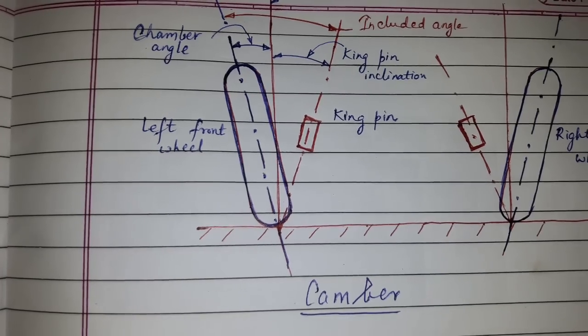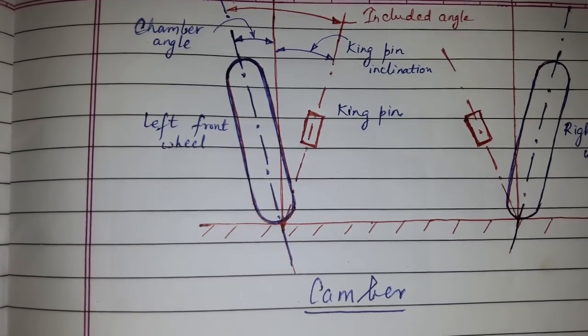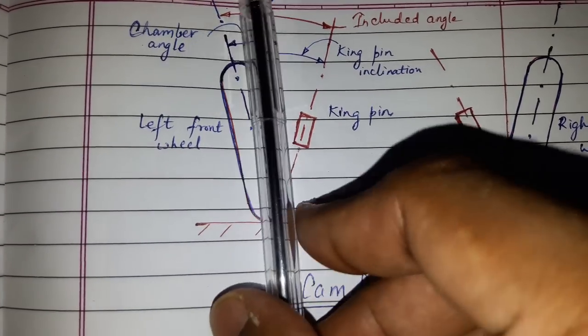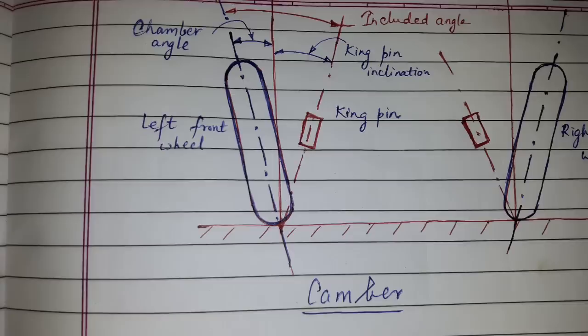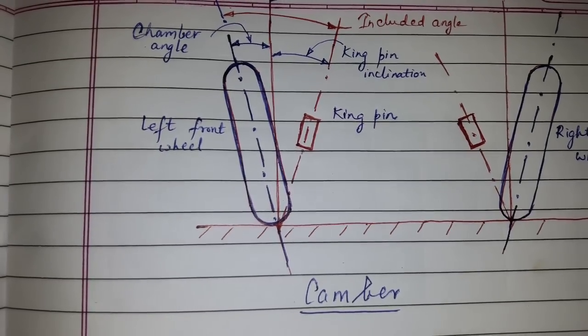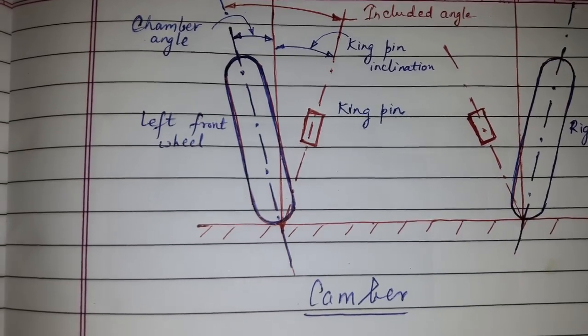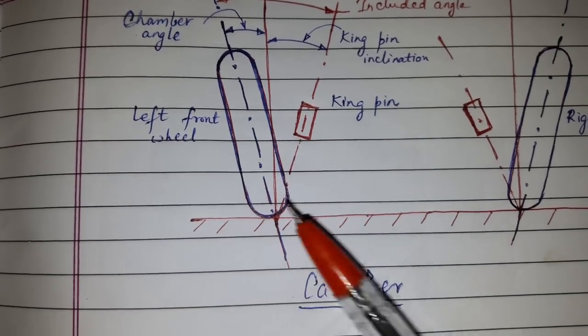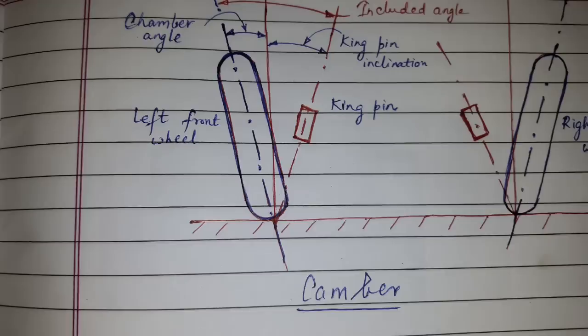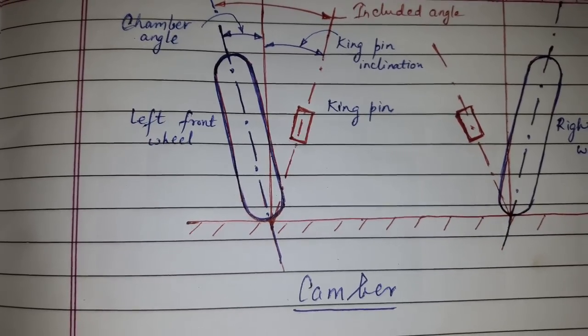Any amount of camber, positive or negative, tends to cause more rapid tire wear because under this condition most of the load is shared by one side of the tire. Therefore, it is clear that tire life will be maximum when the camber angle in the running condition is zero.